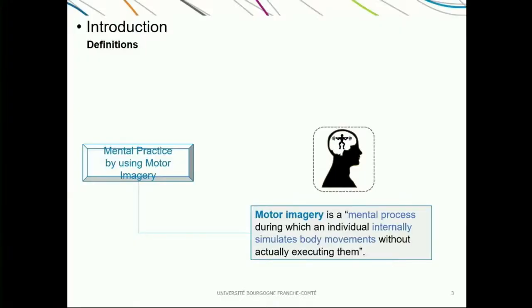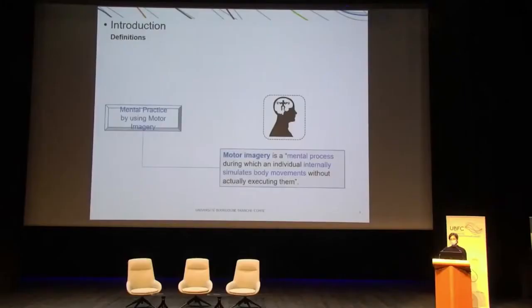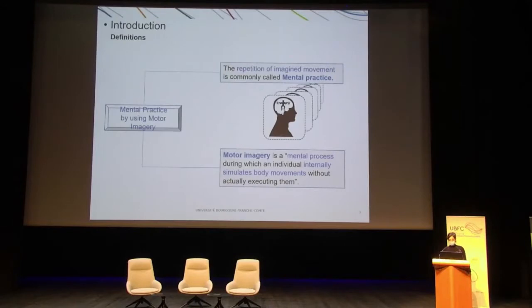Just a few definitions. Motor imagery is a mental process during which an individual internally simulates body movement without actually executing them. In other words, the person imagines themselves moving but without overt motion of their body. Mental practice refers to the act of repeating the imagined movements several times with the intention of learning a new ability or perfecting an existing skill.